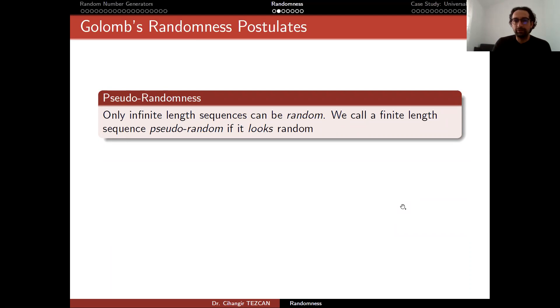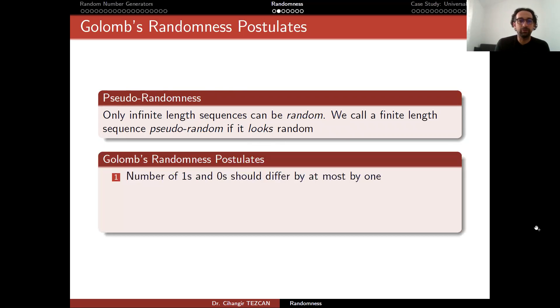So now we can talk about pseudo randomness. Only infinite length sequences can be random. We call a finite length sequence pseudo random if it looks random. So here 'looks' actually is not a scientific definition. So we will try to figure out what looks random. This is why we are going to talk about Golomb's randomness postulates.